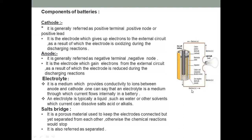Here are the electrons flowing, and here is the bulb connection. Here we have the positive terminal, the anode, and an electrolyte plate. Here we have a separator — that is the salt bridge. Here we have a cations and manganese dioxide mixture, and here is the zinc oxide. The separator separates these components.